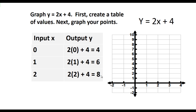The next step is to plot your three key points. 0, 4 is the y-intercept, and it is plotted here. The next point is 1, 6, so we're going to go across 1 and up 6 units and plot our point right here. The next point is 2, 8. We're going to go right 2 units and up 8 units and plot our point here.